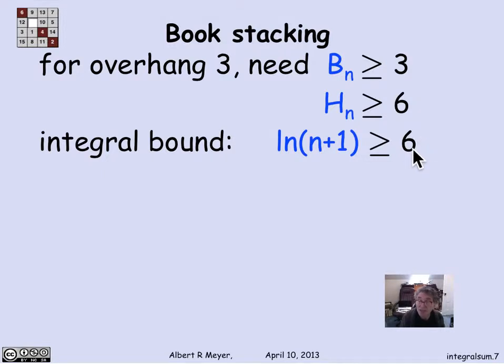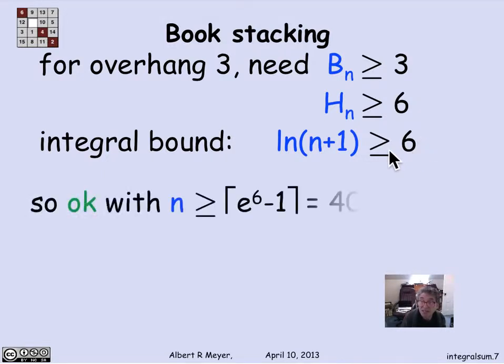Well, exponentiating both sides, the right-hand side becomes e to the sixth. And I figure out that as long as n is greater than or equal to e^6 minus 1 books, rounded up, of course, because you can't have fractions of a book, you get an estimate that with 403 books, I can actually get my stack to stick out three book lengths past the edge of the table.